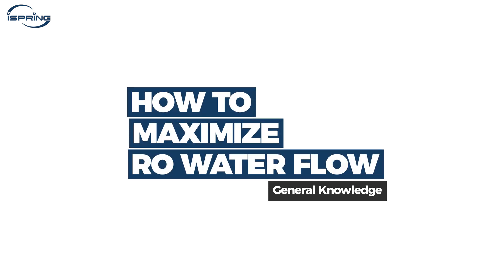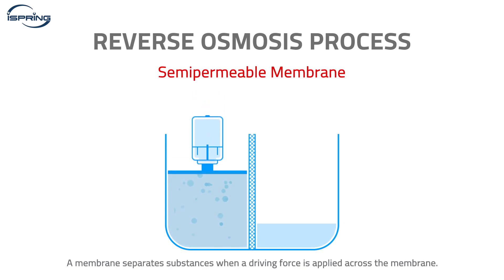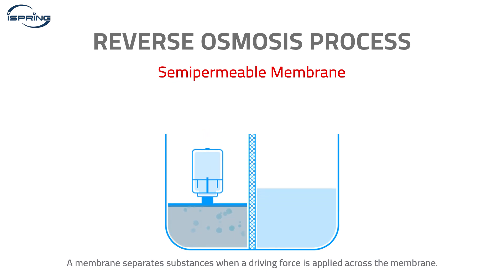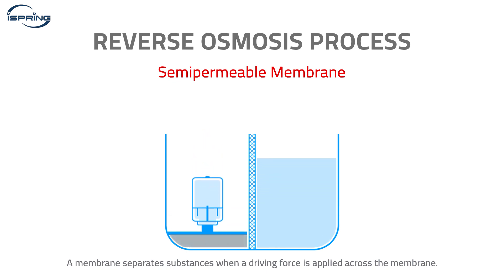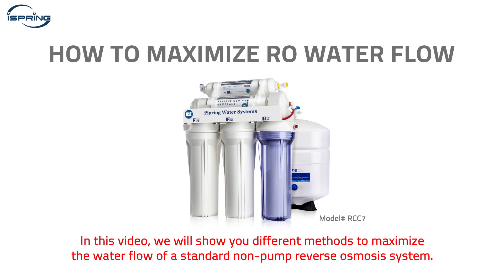How to maximize RO water flow. The reverse osmosis process removes contaminants from water by pushing the water through a semi-permeable membrane with pressure, meaning the RO process is usually on the slow side. Therefore, a pressurized storage tank is sometimes required to supply water from the system on demand. In this video, we will show you different methods to maximize the water flow of a standard non-pump reverse osmosis system.